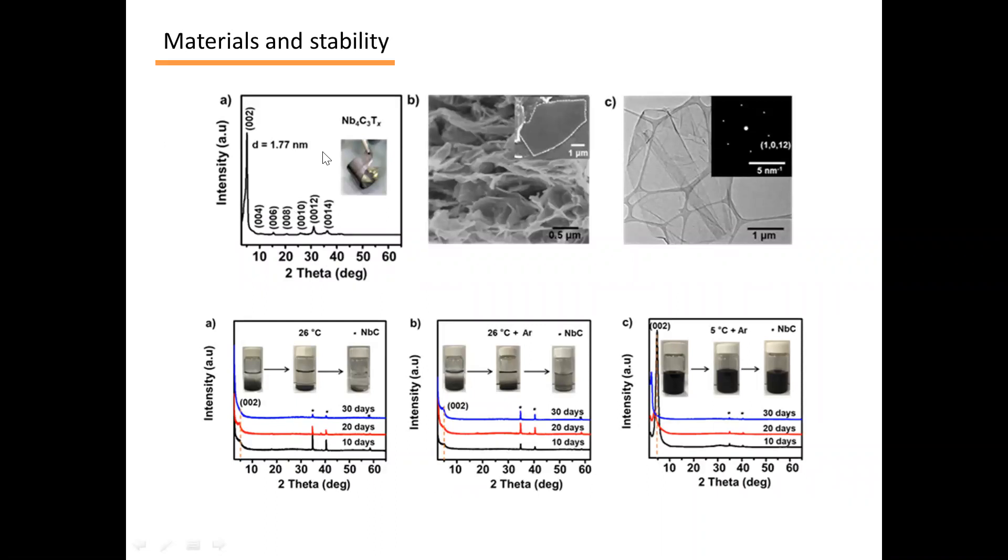Nb4C3 is a member of the MXene family of two-dimensional transition metal carbides. At present, there are more than 30 known MXene materials, and they are well-known and show promise in the field of hydrogen storage, photocatalysis, solar cells, and especially energy storage. Although MXenes and their composites have shown excellent capacitance in supercapacitors,